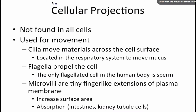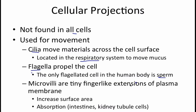Cellular projections are not found in all cells. Cilia move materials across the cell surface — examples include the respiratory system where they help move mucus. Flagella are used to propel the cell, and the only flagellated cell in the human body is sperm. Microvilli are tiny finger-like extensions of the plasma membrane that increase surface area to help with absorption.